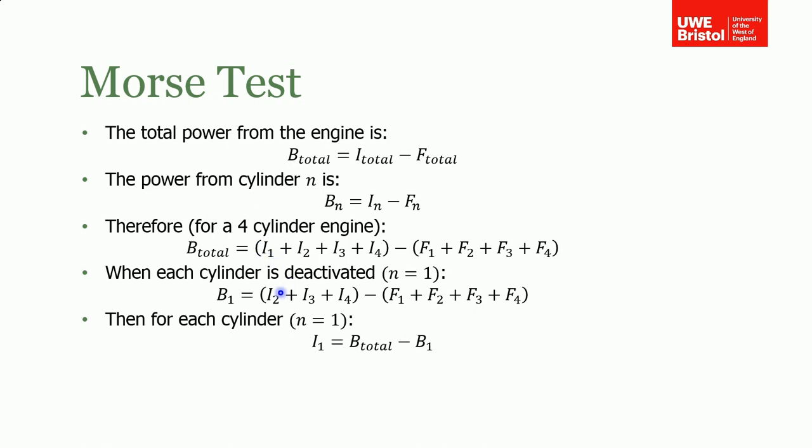So the indicated power now is the total power minus the brake at one. We can then do that for each of the cylinders. If we do b total minus b2, we end up with i2, and so on, so we can do it for each of the cylinders. We end up with the indicated power for each cylinder, so we can then find the total indicated power for the engine minus that from the total, and then we've also found the frictional losses for the whole engine as well.